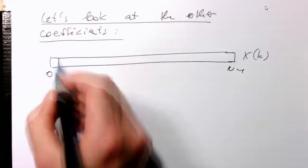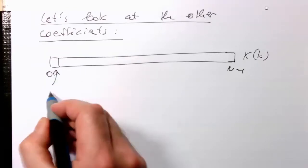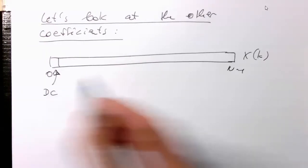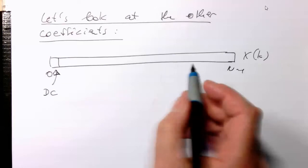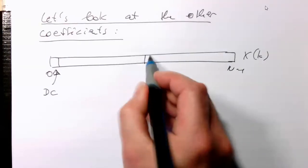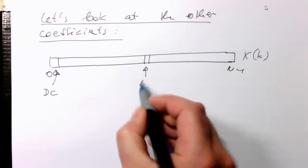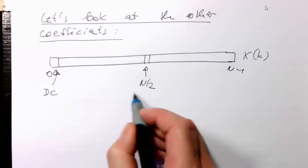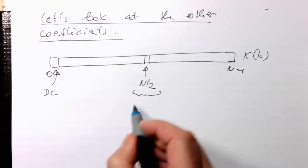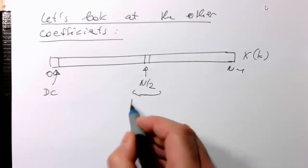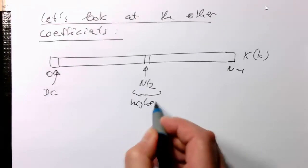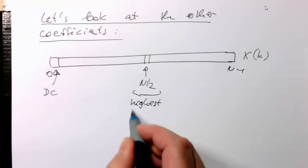So we know that this first one here, that's our DC. And then somewhere in the middle here at n half, this corresponds to the highest frequency or the Nyquist frequency.